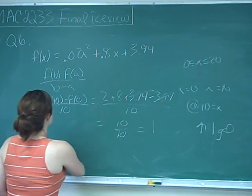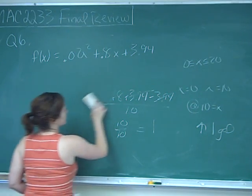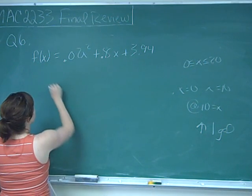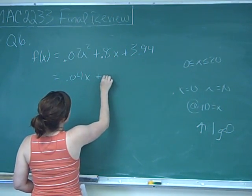And then the second part, we're looking for the instantaneous rate of change, which we find by taking the derivative. The derivative of this is going to be 0.04x plus 0.8.